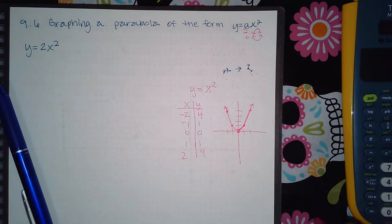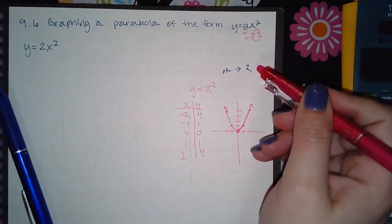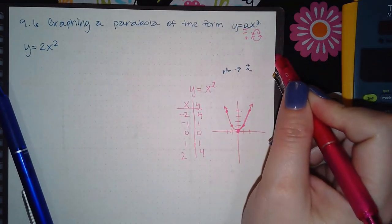If you plot your points and then click this little icon that will draw the curve for you, if it doesn't look like a U shape but looks like something weird, then you know that your points are not correct.